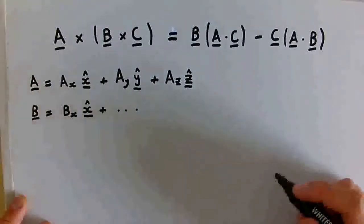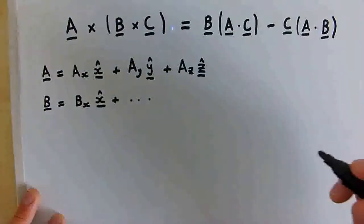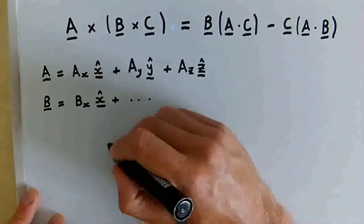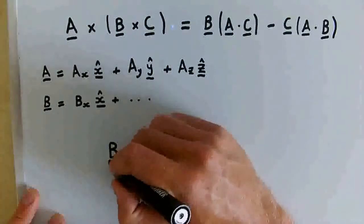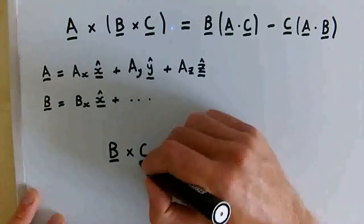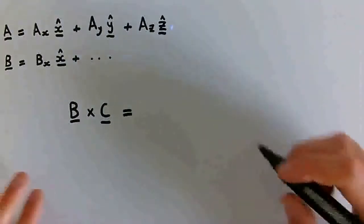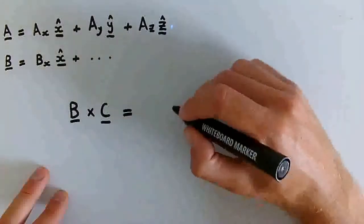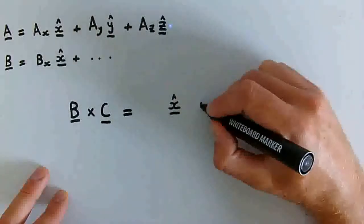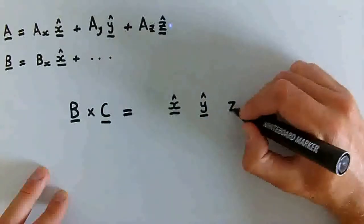We'll start with the left-hand side and begin by calculating the cross product of B and C. We'll work this out using the determinant, with x-hat, y-hat, and z-hat along the top row.